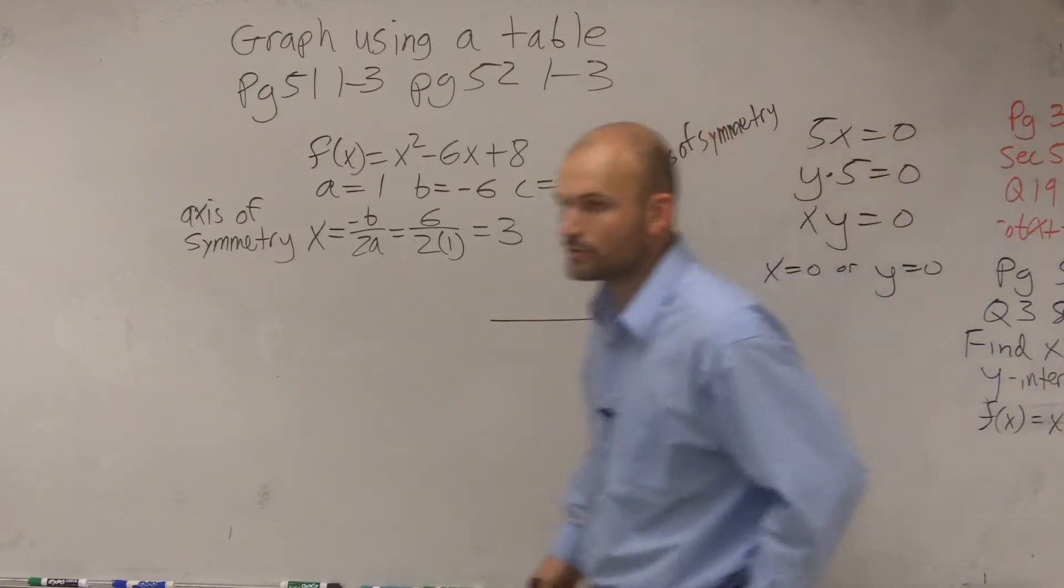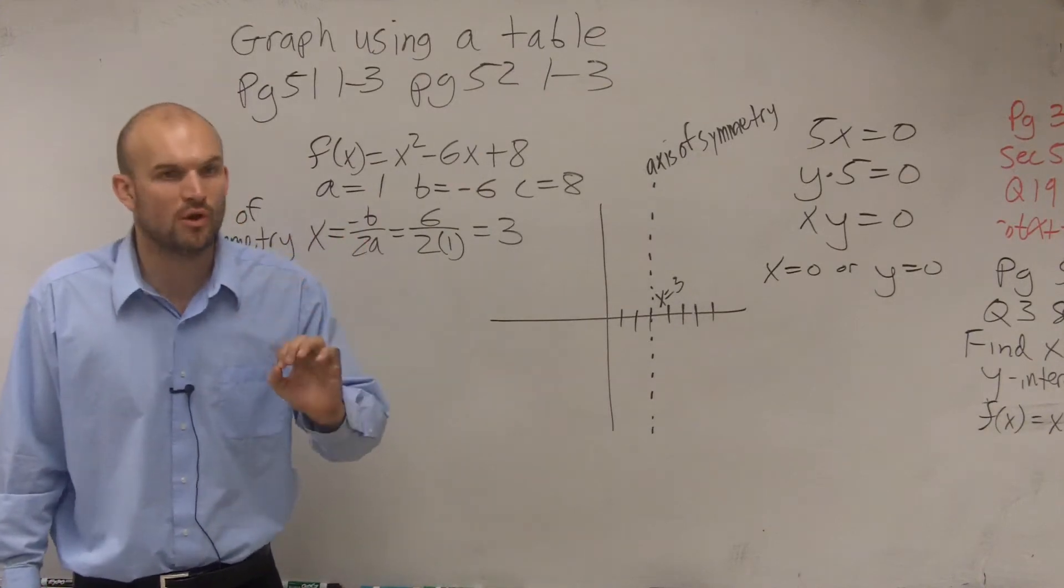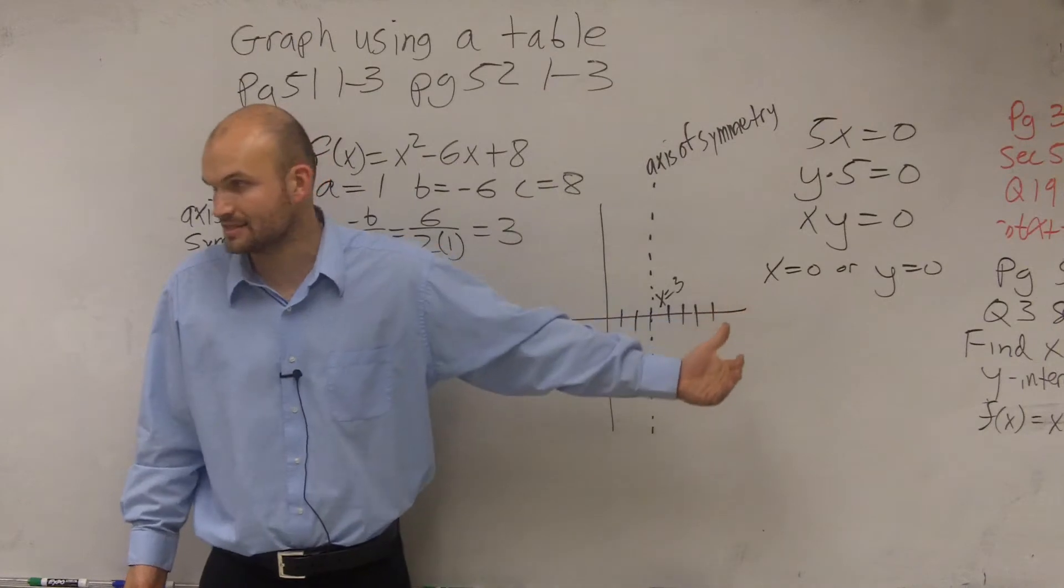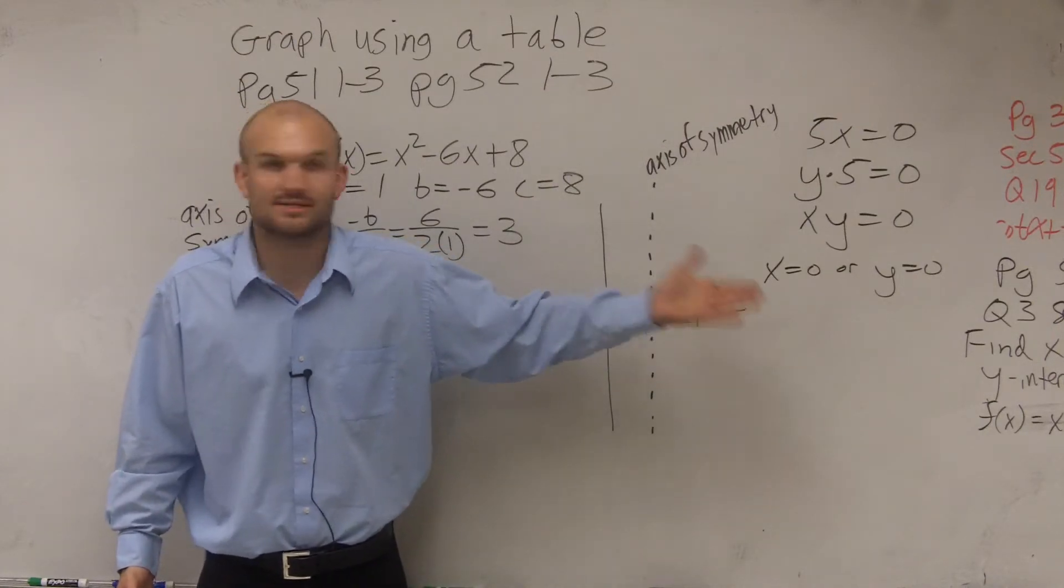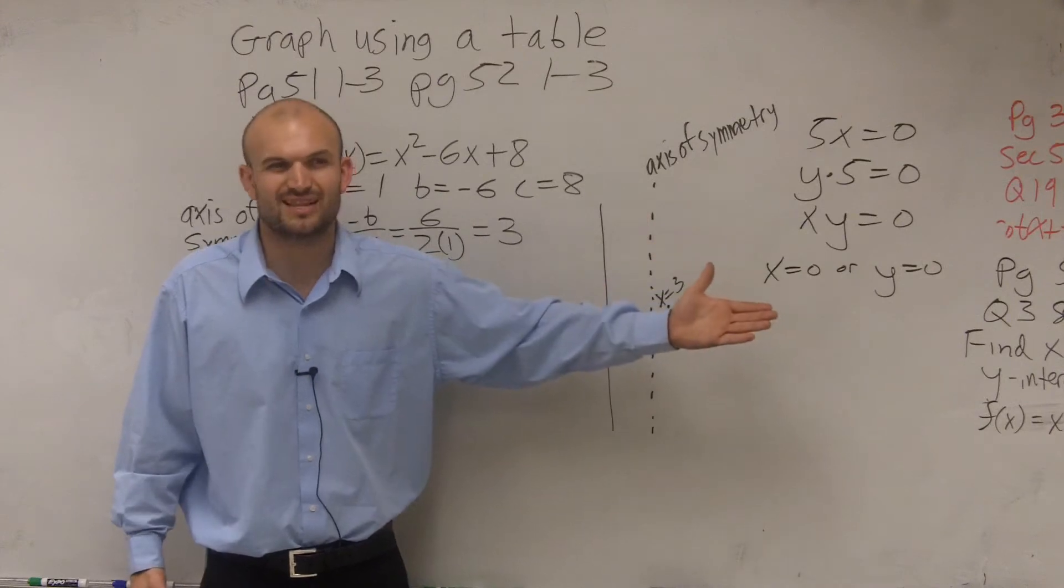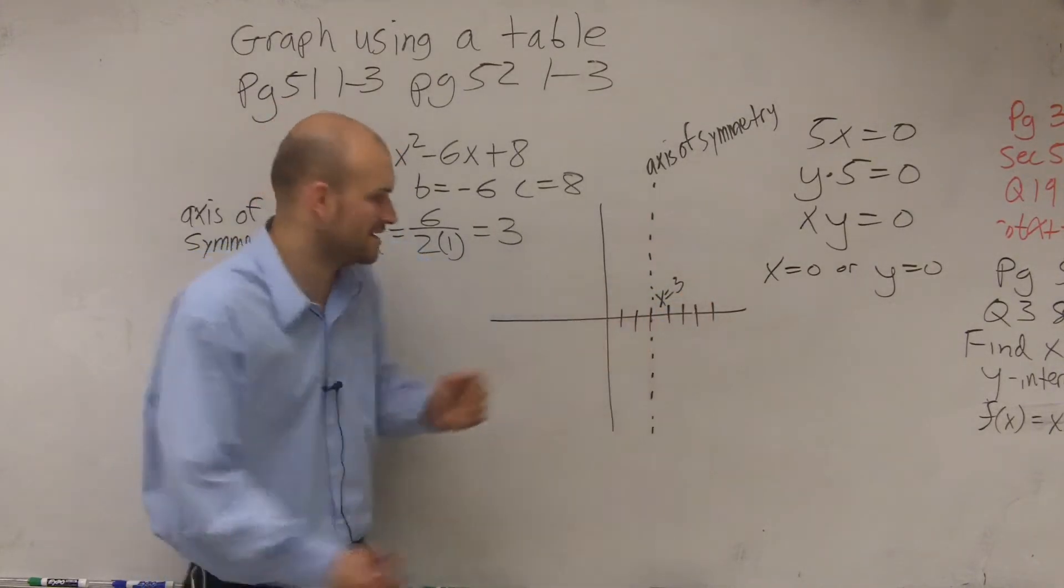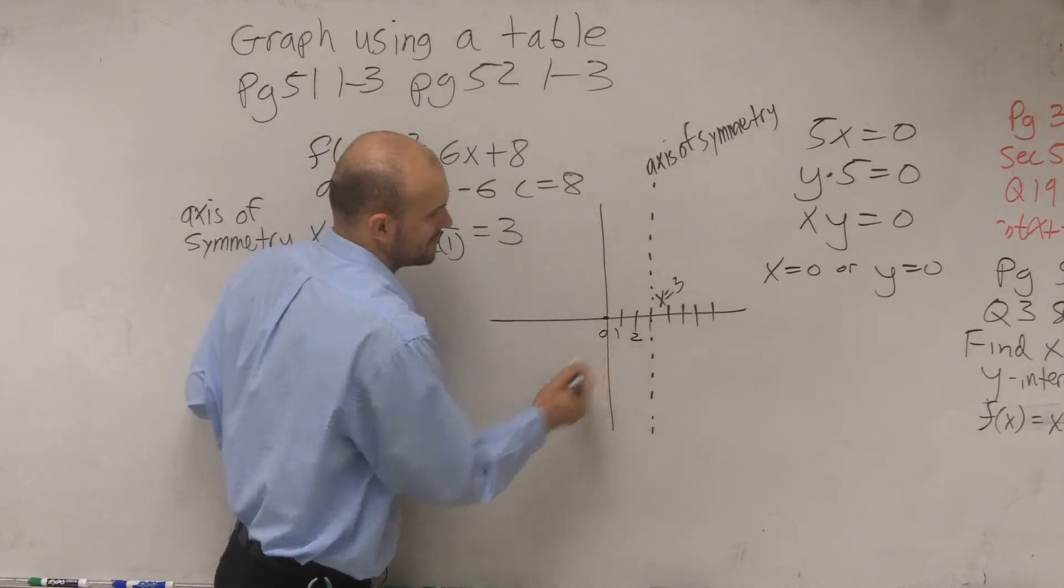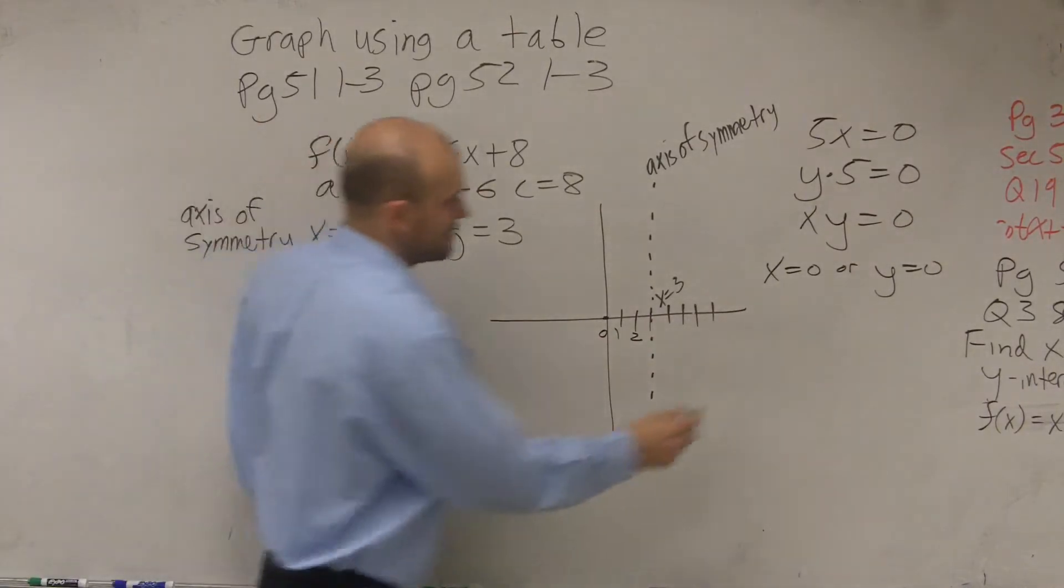So now what we're going to do is I'm going to have you guys pick two points, either to the left or to the right of the axis of symmetry. You only need to pick two points for me. So would you guys like to pick to the left or to the right? Let's pick left because they're going to be smaller numbers. If you have 2 and 1, those are going to be two points to the left. And actually, let's do three numbers, just because 0 is not that bad.